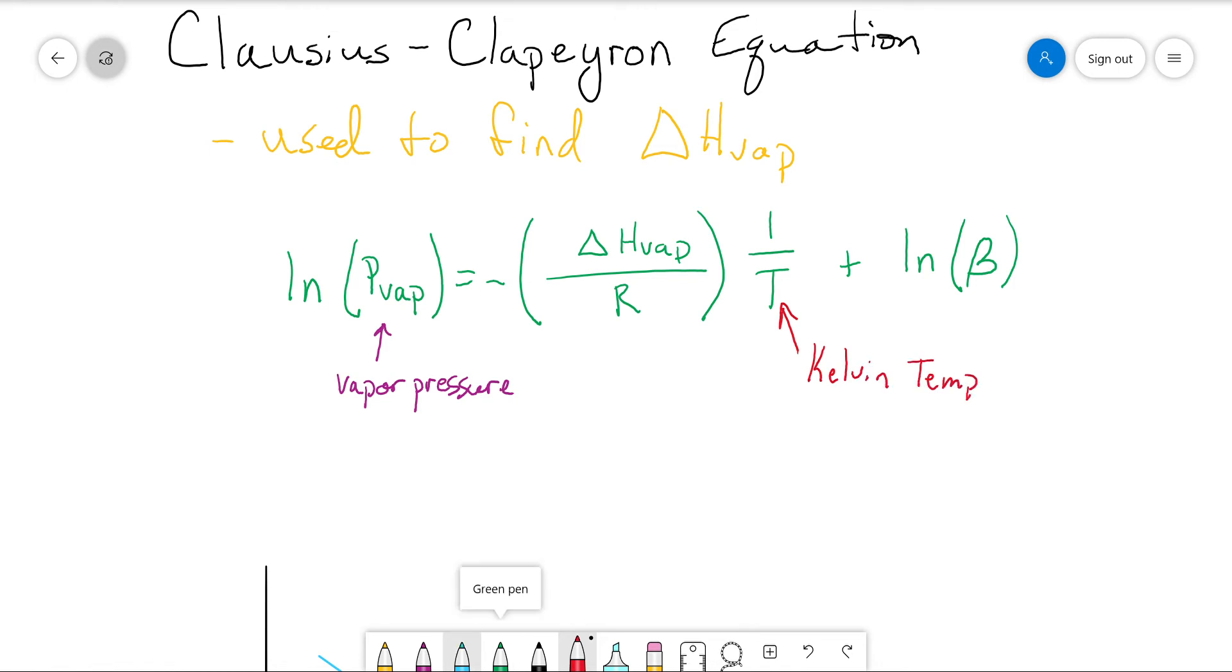And if you're unsure as to whether it's Kelvin temp or not, just look at R. And R is 8.314 joules per Kelvin times mole. So we know it has to be Kelvin temp to match. And then that beta, that's just a constant for the substance. That's something you would look up.